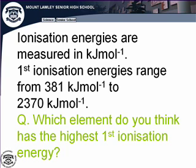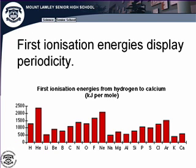The values of first ionization energies range from 381 kilojoules per mole to 2370 kilojoules per mole. The question I often pose to my classes is which element has the highest first ionization energy — students invariably say hydrogen, then almost instantly change their mind to helium, which is correct. This graphical representation shows the first 20 elements, and we're going to try to explain the trends and what factors influence the value of ionization energy.